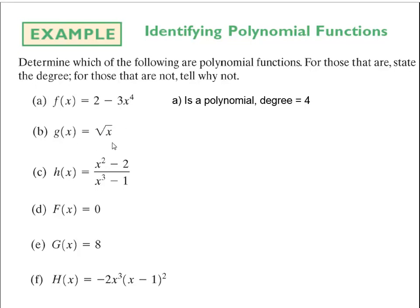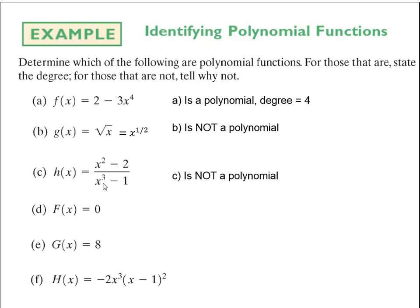The second equation is not a polynomial, because the square root can be written as x to the one-half, which is a rational exponent — not an integer. The third one is also not a polynomial; any time we have an x in the denominator, that's actually a rational function, which we'll cover later in chapter 5.